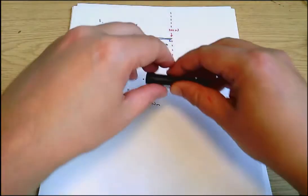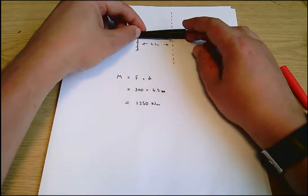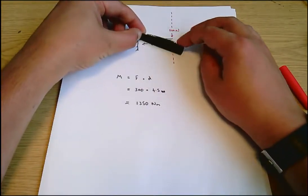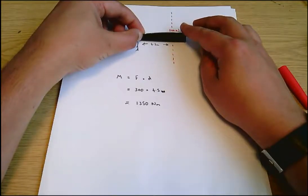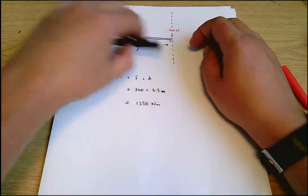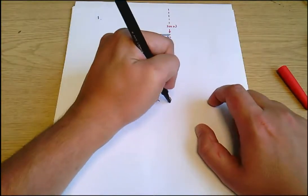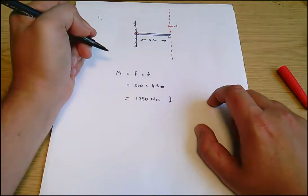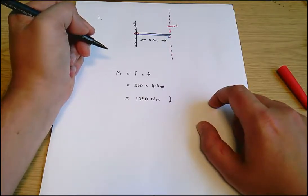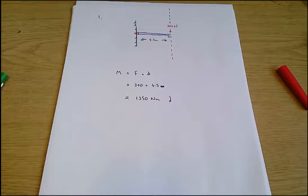Thinking about direction: if I fix my pen lid at the pivot and apply the force, it moves around in a clockwise direction — moving from about three o'clock to four o'clock. In the question we're asked for the clockwise moment, which means we use a positive number for clockwise and a negative number for anti-clockwise. So that's a correct answer, and that's question one complete.